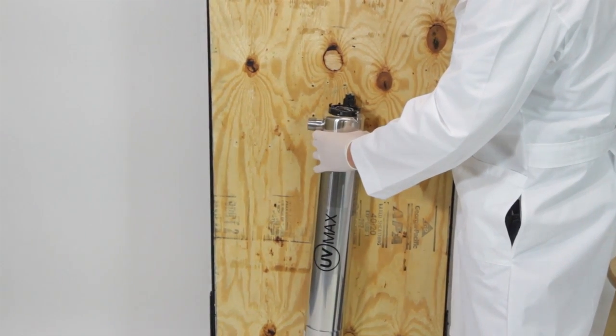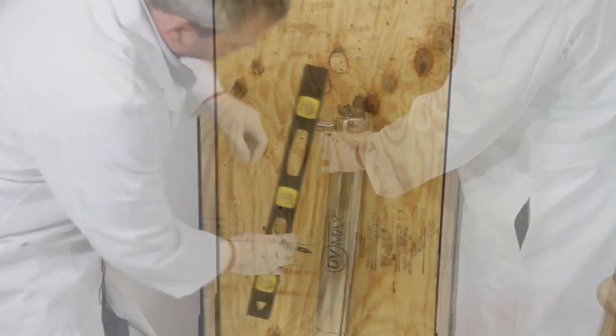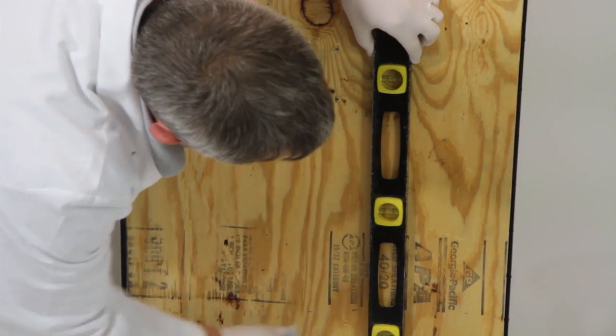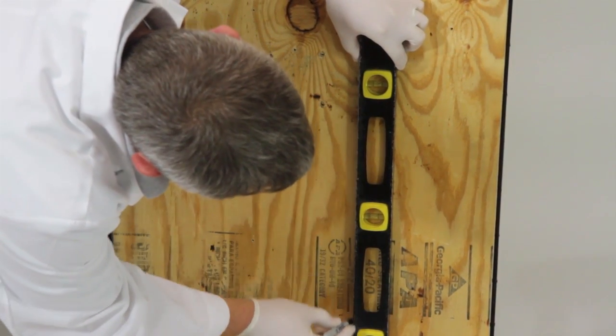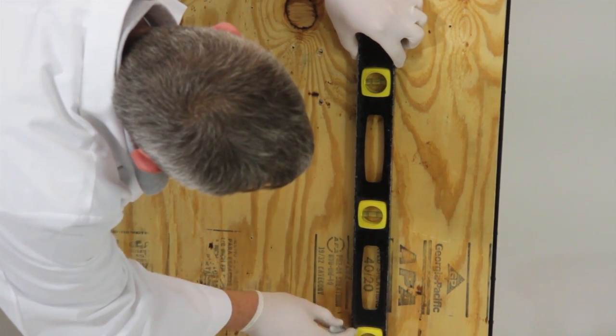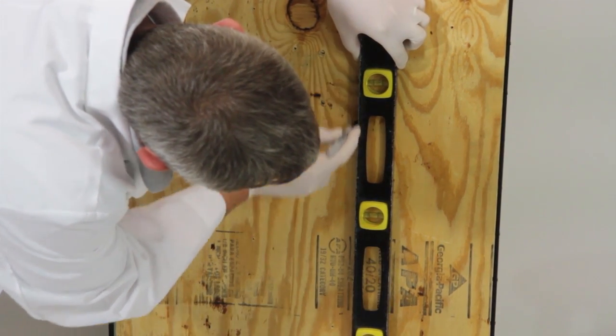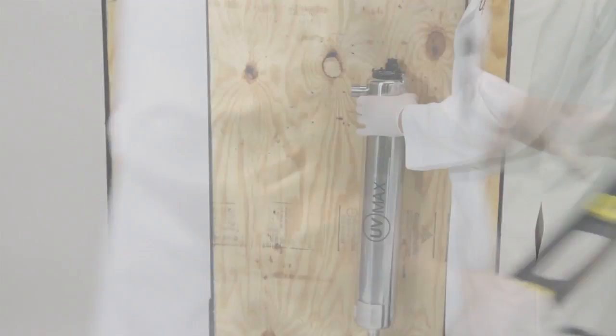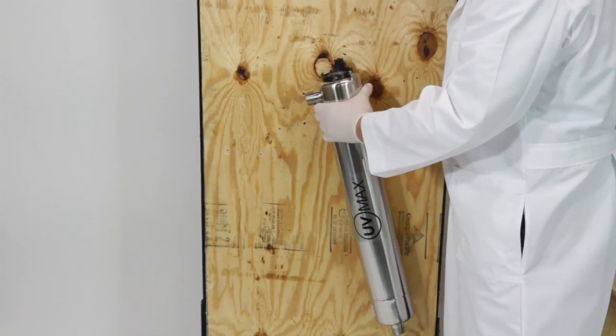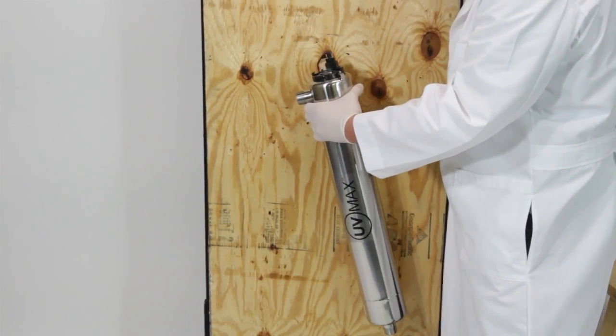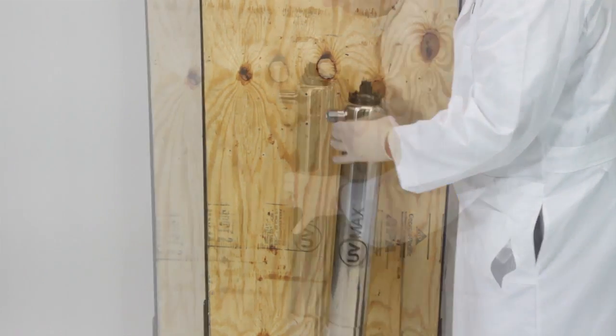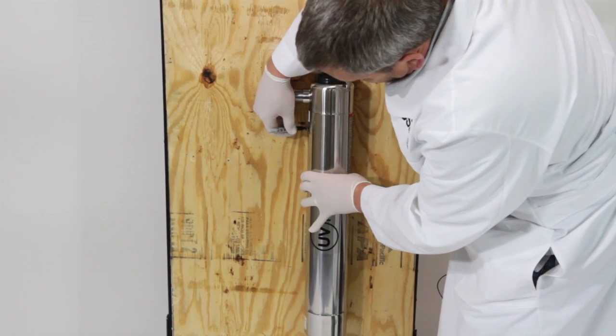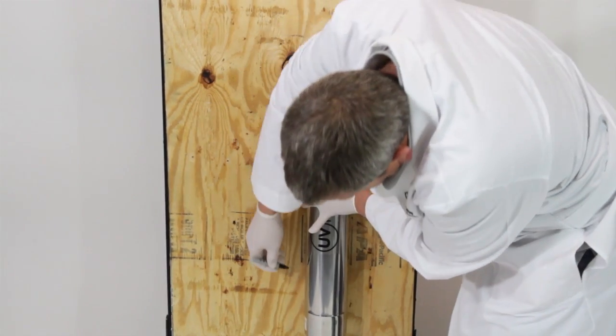Once we know where we're going to put it, then what I usually do is take a level and a sharpie and draw a center line so I know exactly where level is, so we're not cocked one way or the other. It doesn't necessarily inhibit the performance of the UV, but it will make it tougher to plumb. So we just want to give a couple marks where we're going to install our clamps.